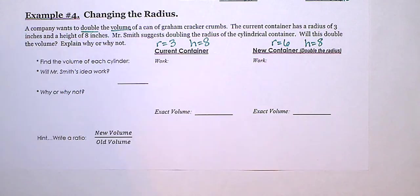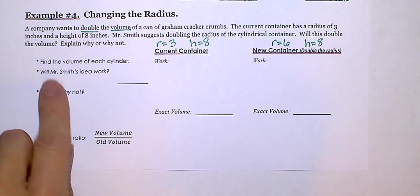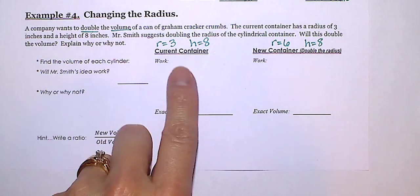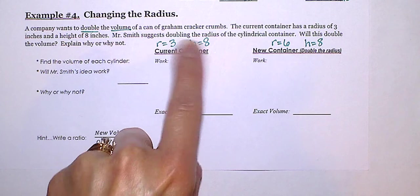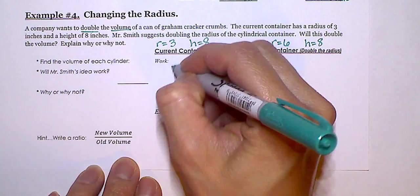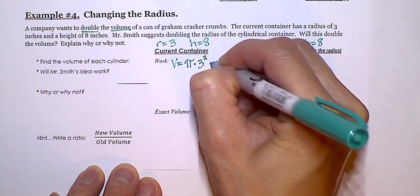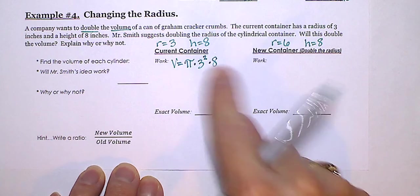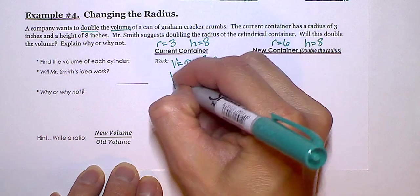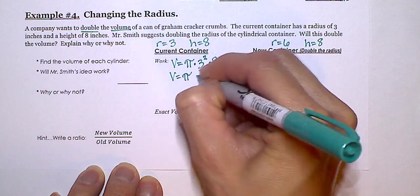So let's see if that statement is true. Will Mr. Smith's idea work? So first, let's do the volume of this container. So V equals pi times radius squared times height. Don't forget to do exponent first. So volume equals pi times 9 times 8.